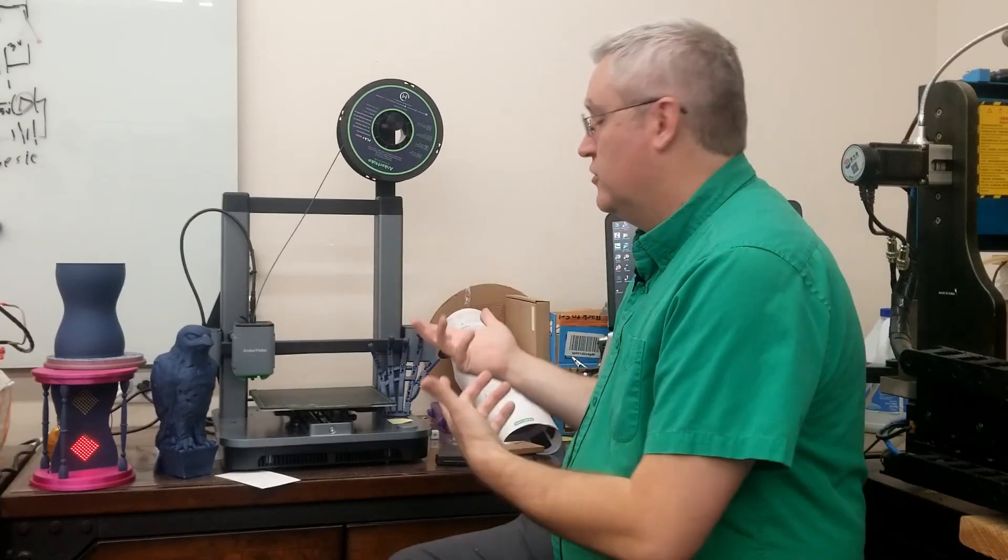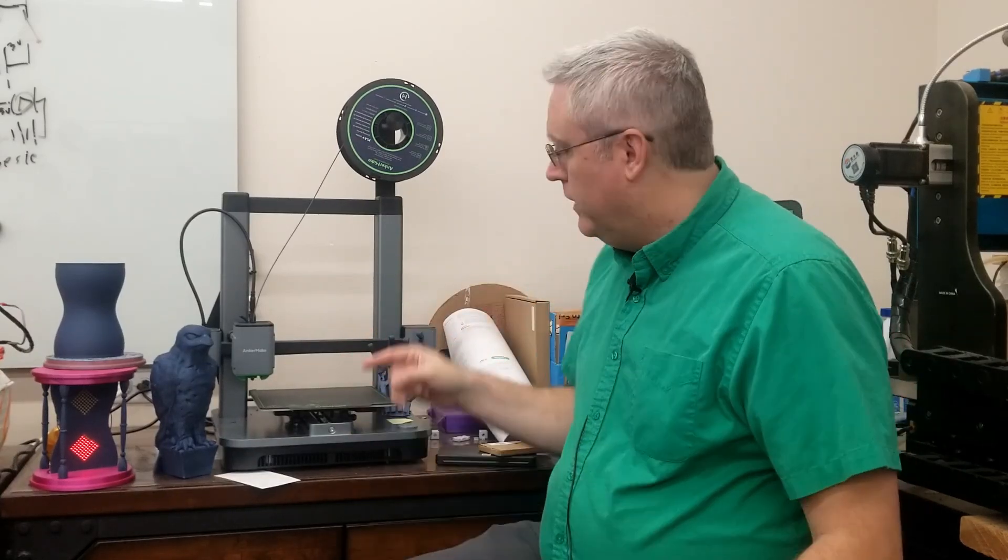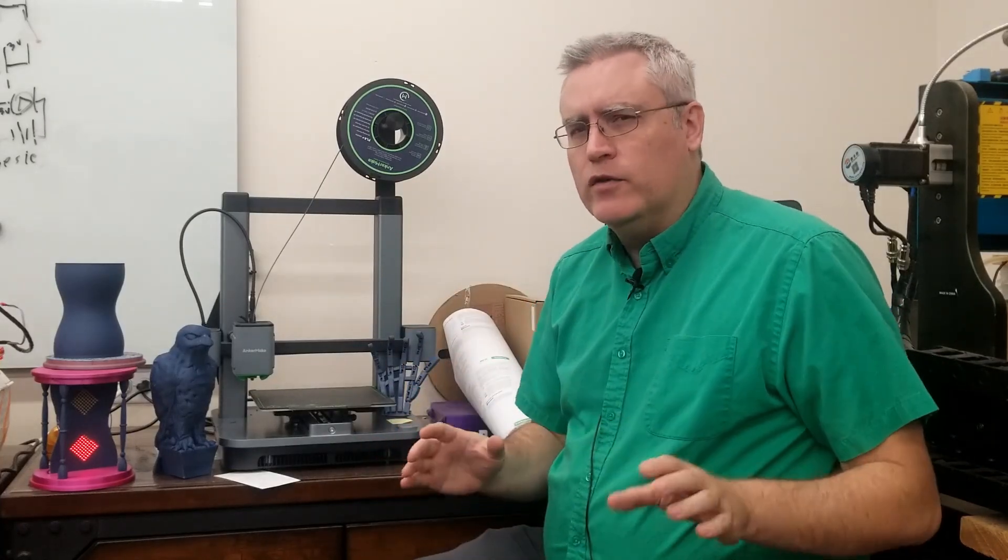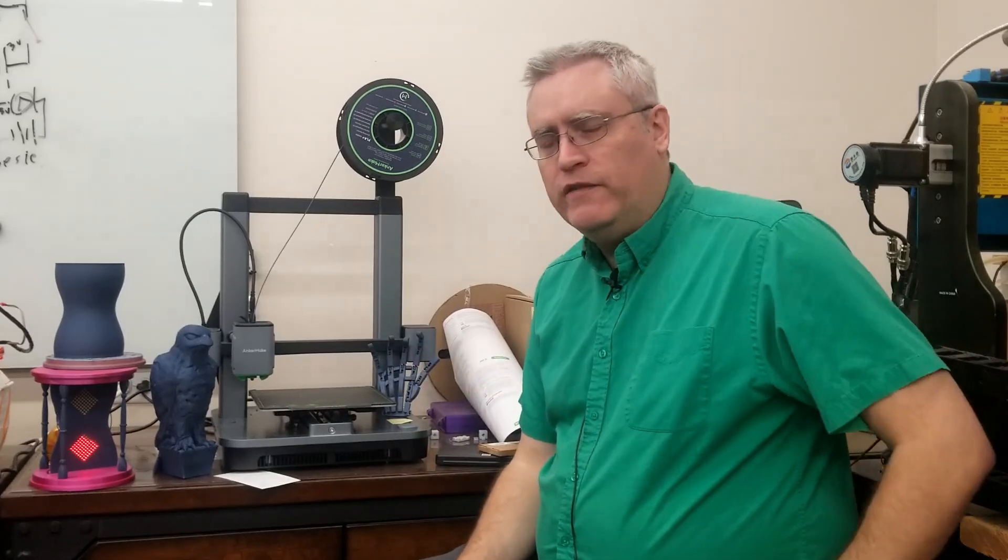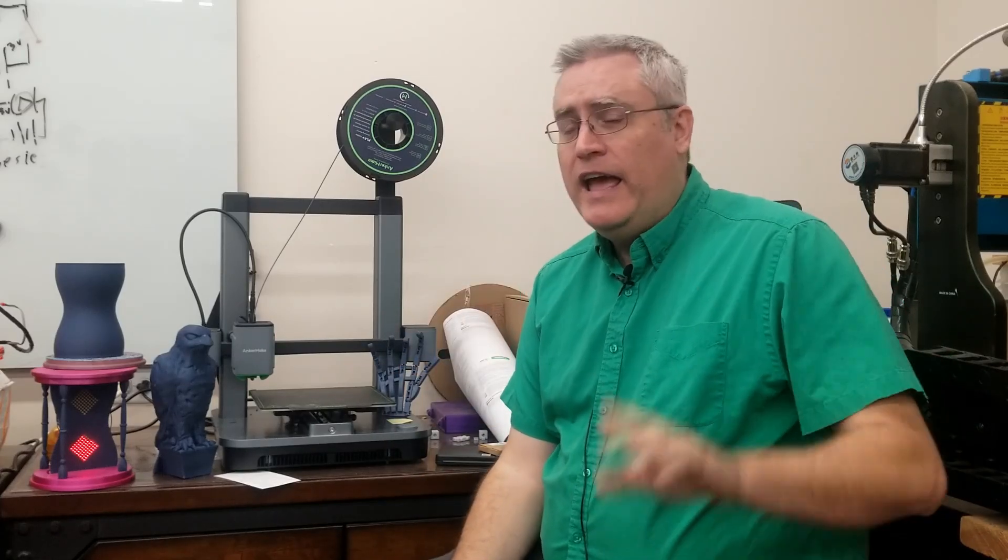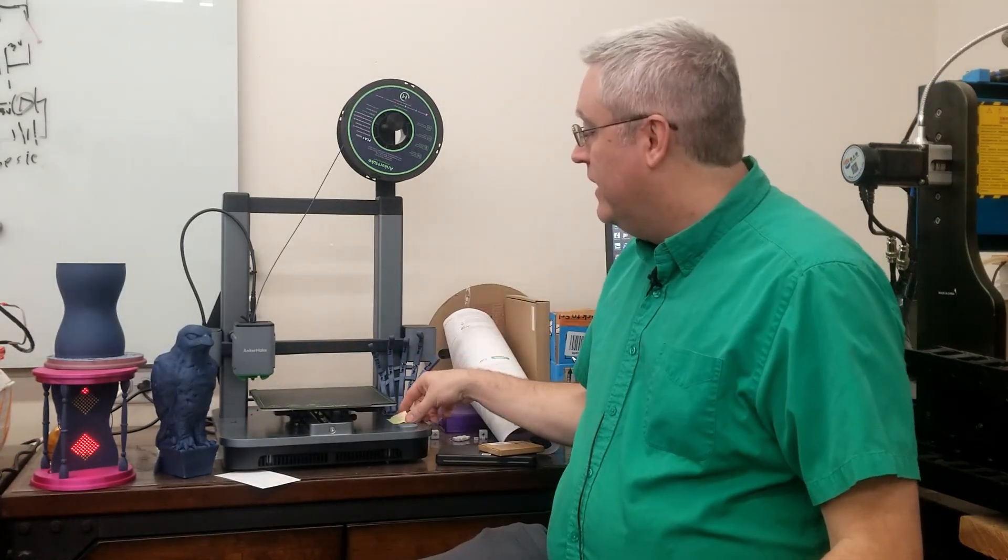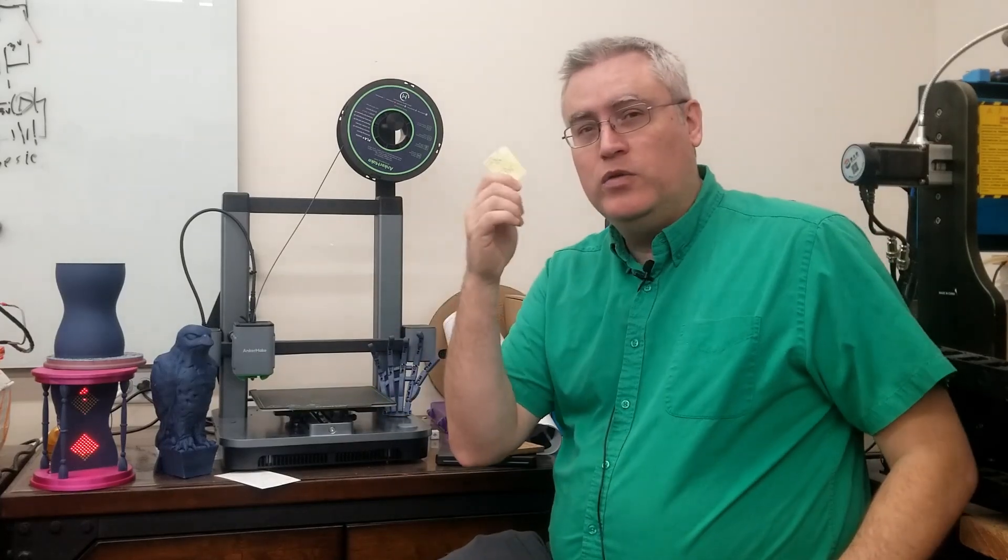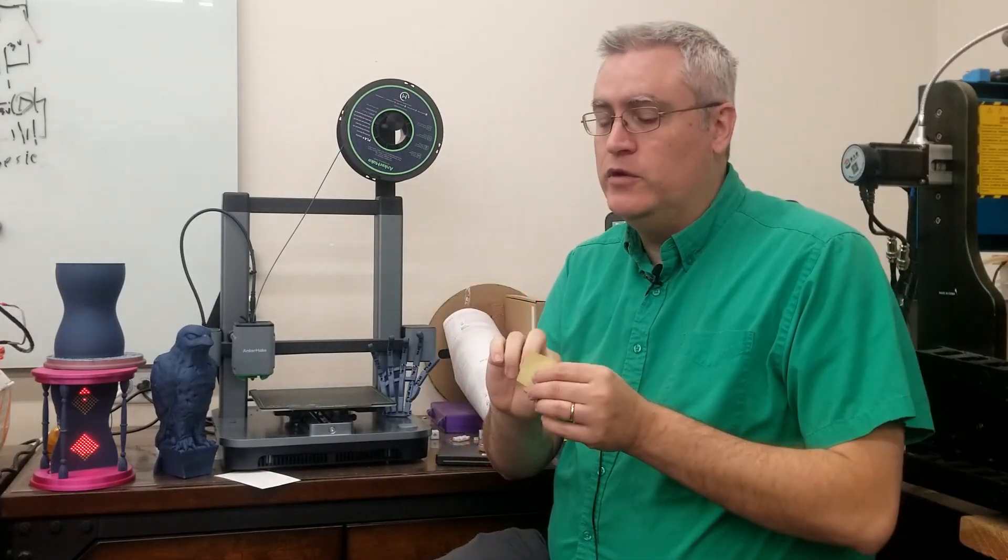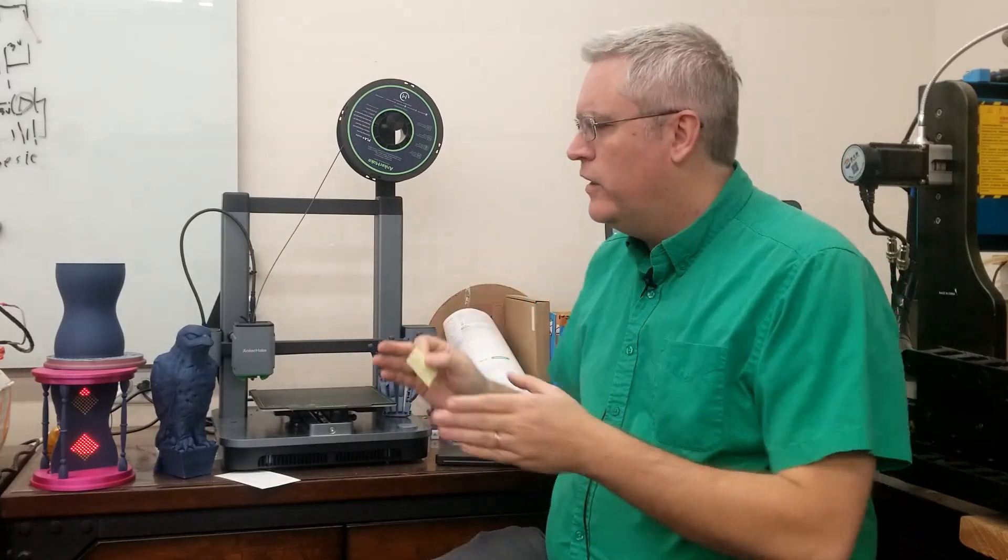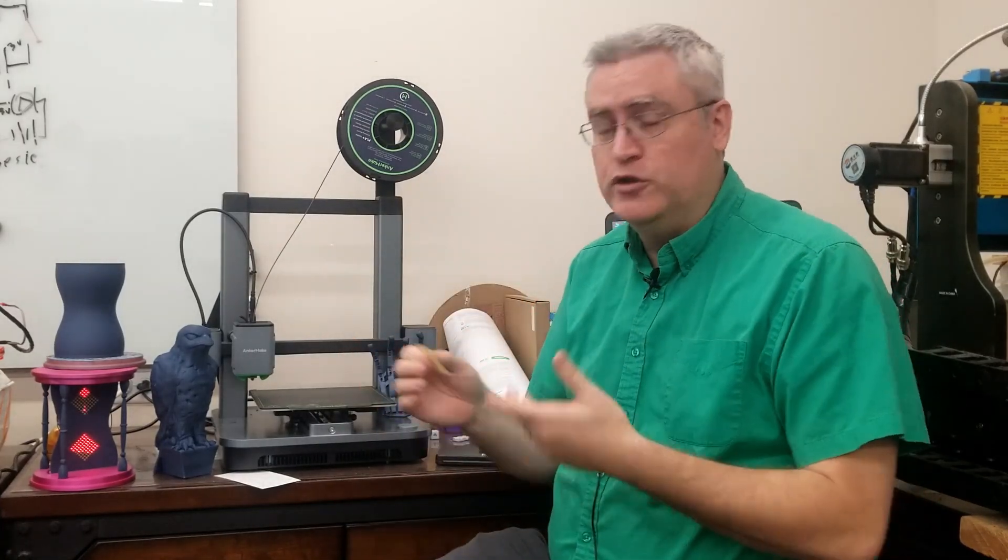Now while this doesn't have a screen on it for you to interface with, it does have a big button that will ostensibly start prints. However, this button actually has three functions: you can press the button, you can double press the button, or you can press and hold it for three seconds. And each of those does something different based on what you've configured it to do in the software. And I guarantee you will never remember what any of them are. I have had to take a little sticky note and put it next to it with the functions written on them so that I would remember.